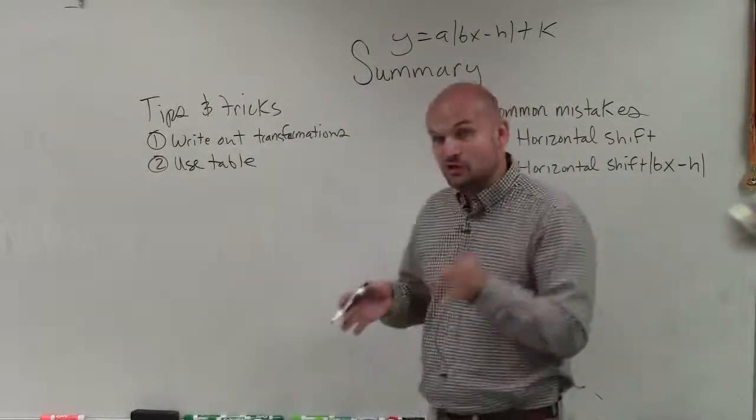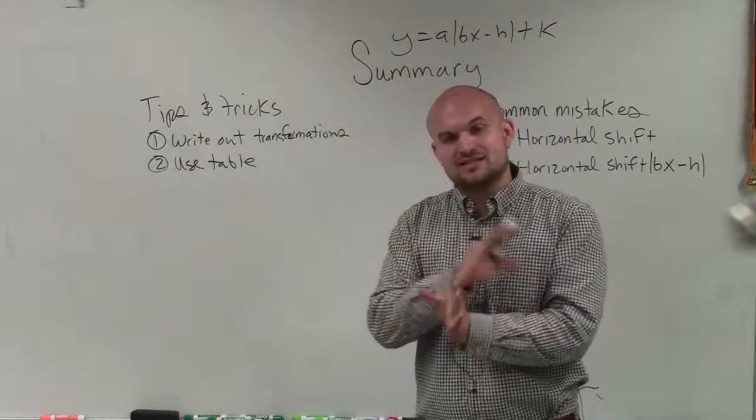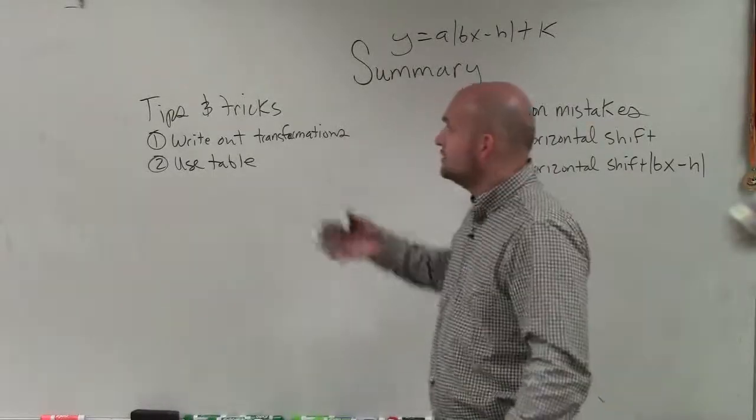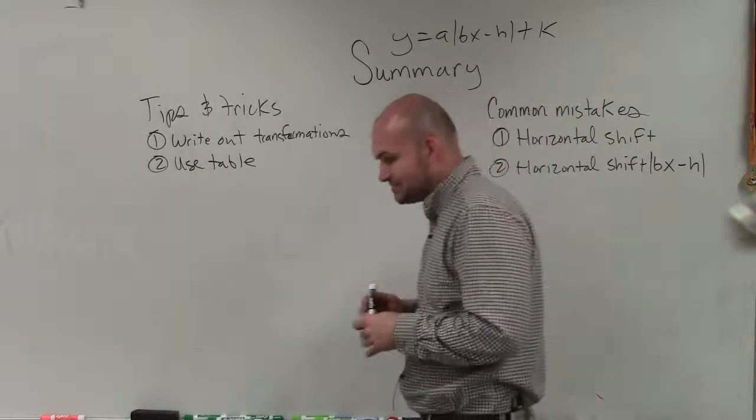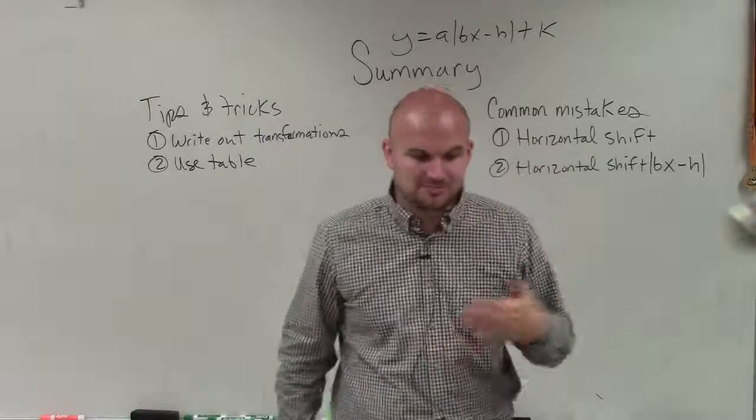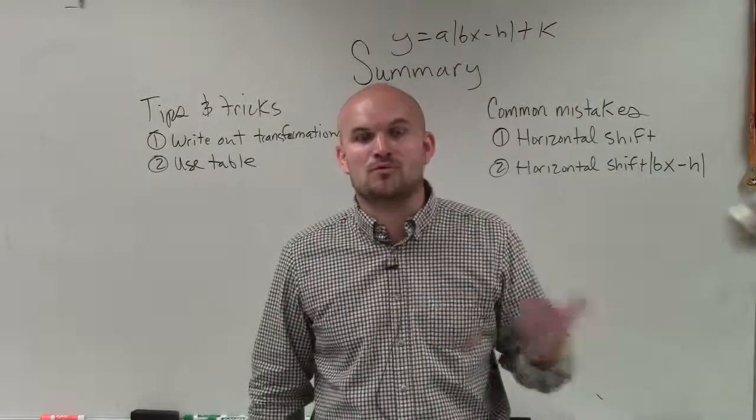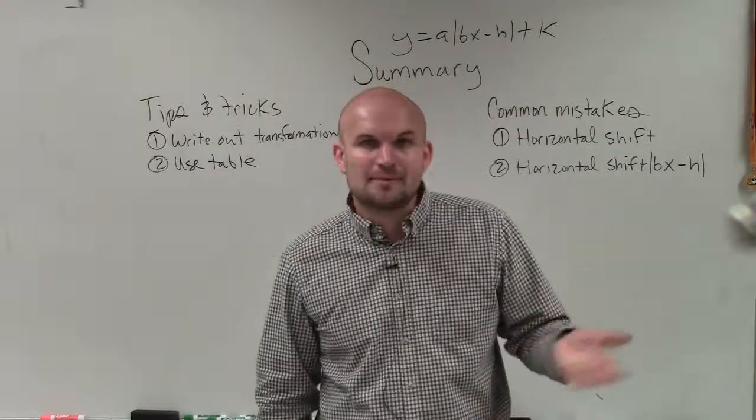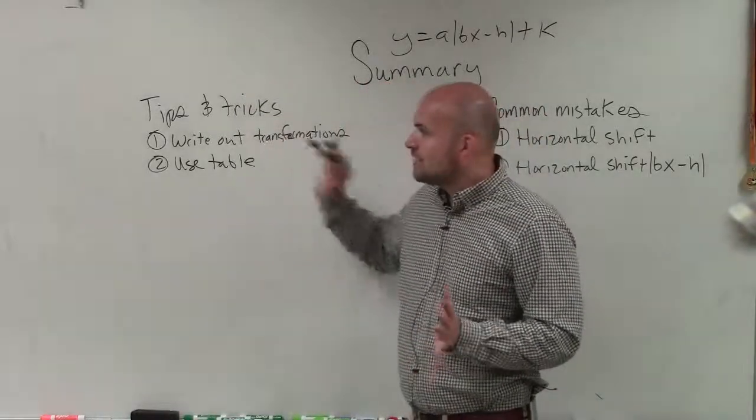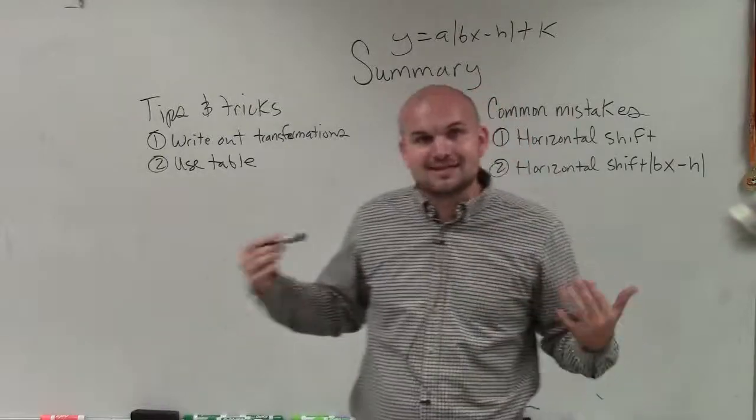Because absolute value function is that v-shape, it's reflective about the axis of symmetry that goes through the vertex. Now, some tips and tricks. So I get a lot of students that can identify the transformations, but things that they forget is what were all their transformations. Most commonly, like reflecting, they just forget. They lose it.